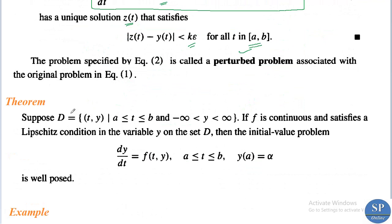Now we have a theorem. Suppose D is the set of all points (t, y) such that a ≤ t ≤ b and -∞ < y < ∞, that is the infinite strip already discussed. If f is continuous and satisfies the Lipschitz condition in the variable y on this infinite strip D, then the initial value problem dy/dt = f(t, y), a ≤ t ≤ b, y(a) = α is well-posed. So if f is continuous and satisfies the Lipschitz condition, the IVP has a unique solution and is well-posed.